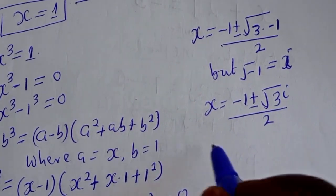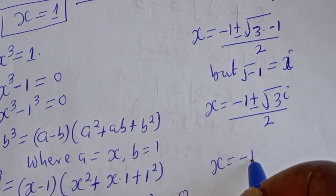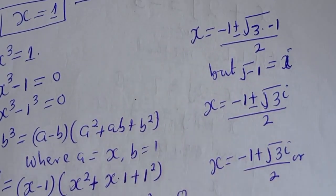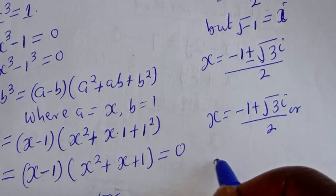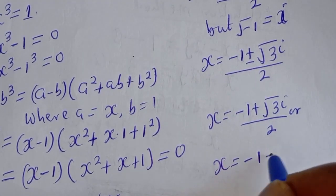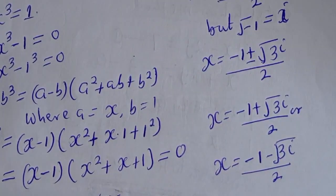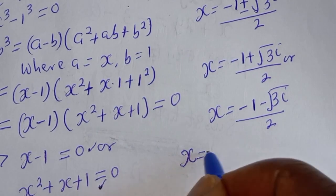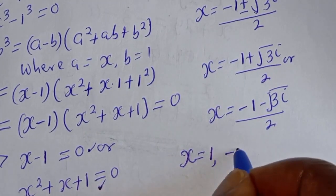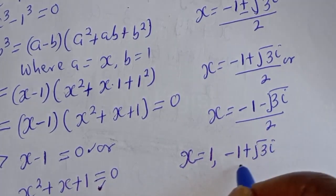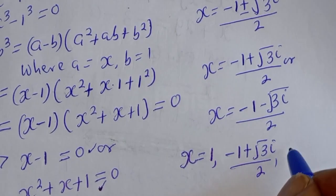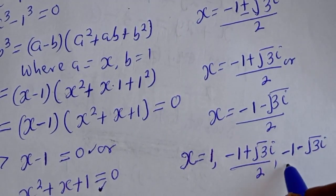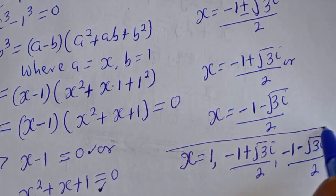Since square root of minus 1 is i, s equals minus 1 plus or minus root 3 i, all over 2. Therefore our final answers are: s equals 1, s equals minus 1 plus root 3 i over 2, and s equals minus 1 minus root 3 i over 2. This is the final answer.